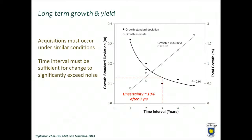If you're interested in change detection — in this example the change we're interested in is canopy growth — this is relevant because monitoring has come up time and time again in the LiDAR community. We're starting to understand uncertainties for a single dataset, one snapshot in time, but what does that mean when comparing attributes through time? In this example, what we're looking at is canopy growth.